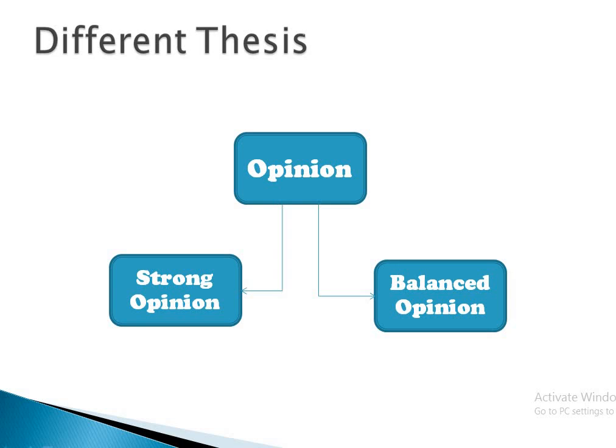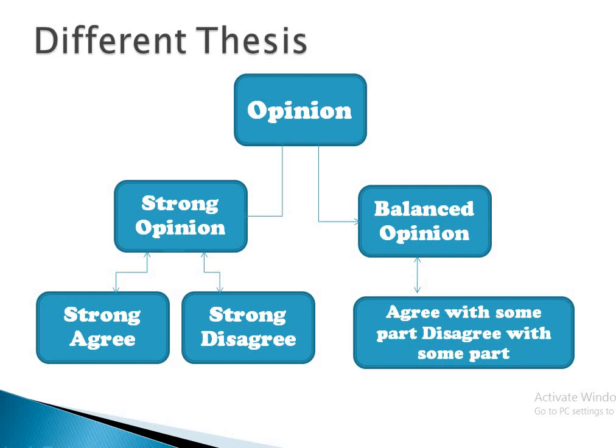There are two kinds of opinions: strong opinion and balanced opinion. In a strong opinion, you can strongly agree or strongly disagree. In a balanced opinion, you can agree with some parts and disagree with others — it becomes a mixture of agree and disagree. If you want to give a strong opinion, you must be strongly agree or strongly disagree.